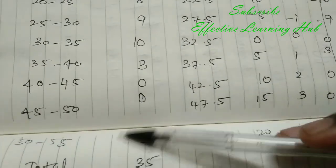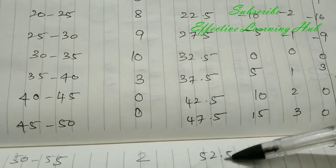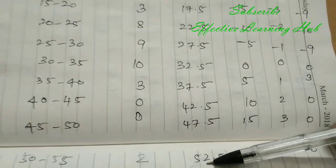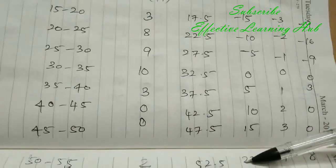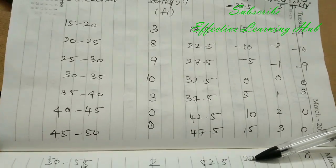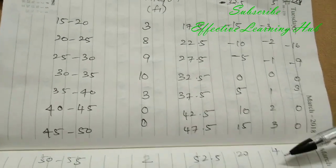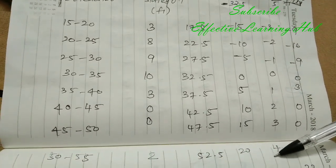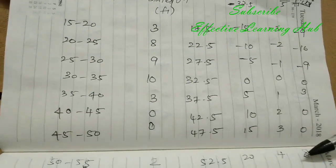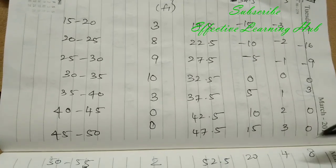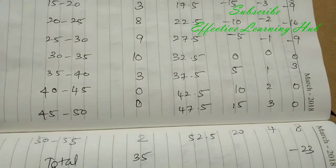One more value is there, 52.5, F is 2, middle term 52.5. DI equal to XI minus A is 20. DI by 5, 20 divided by 5 equal to 4. Multiply FI into DI, 4 into 2 is 8.